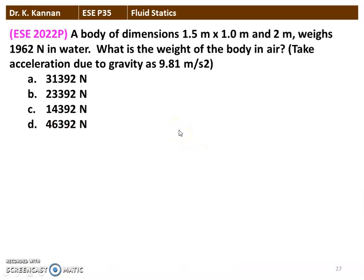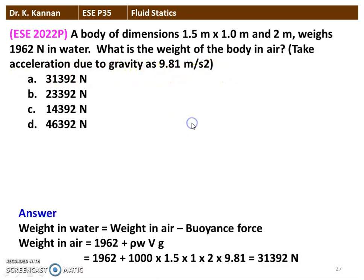The next question from the 2022 question paper. A body of dimensions 1.5 m × 1 m × 2 m weighs 1962 N in water. What is the weight of the body in air? (Take g = 9.81 m/s².) Weight in air = weight in water + buoyancy force = 1962 + ρ_w × V × g = 1962 + 1000 × 1.5 × 1 × 2 × 9.81 = 1962 + 29,430 = 31,392 N.